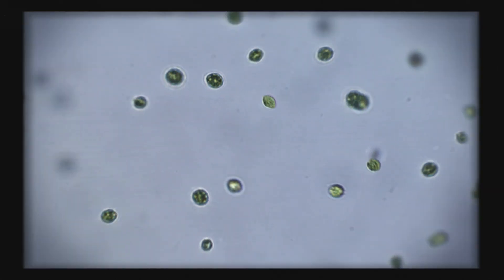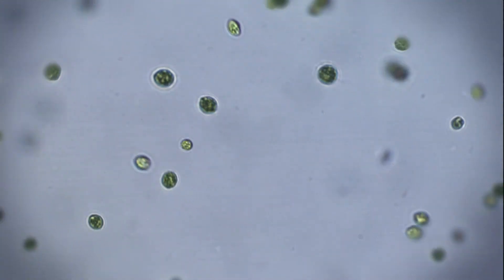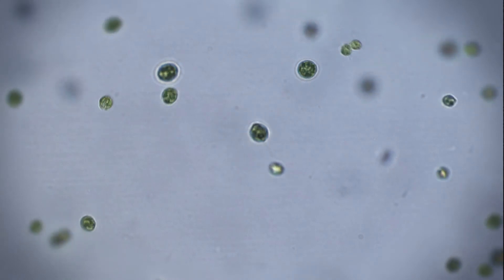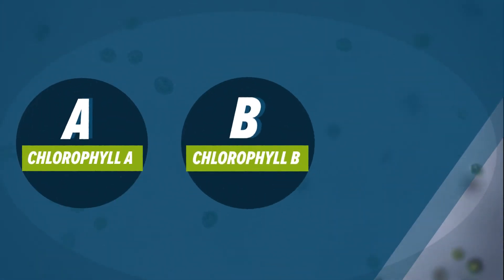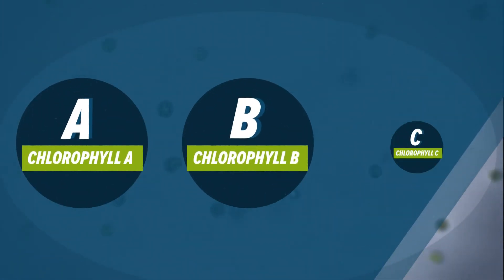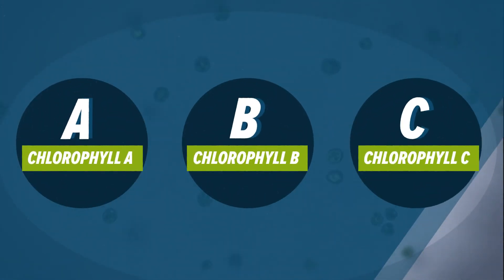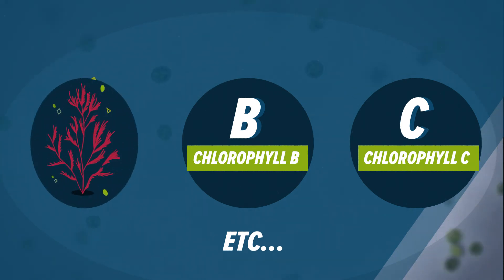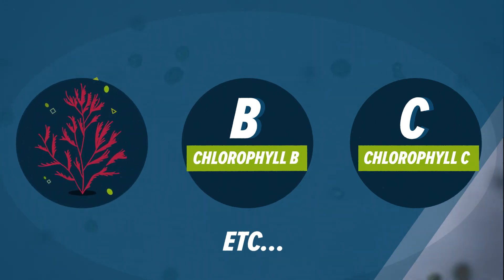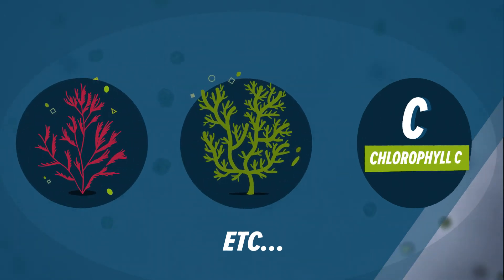Different chloroplasts produce combinations of different pigments, like chlorophyll A, chlorophyll B, chlorophyll C, carotenoids, etc. Because of this, different groups of algae exhibit different colours.